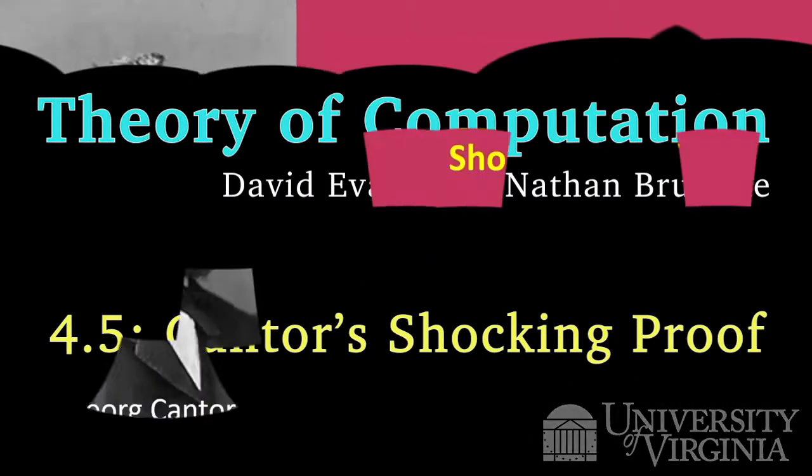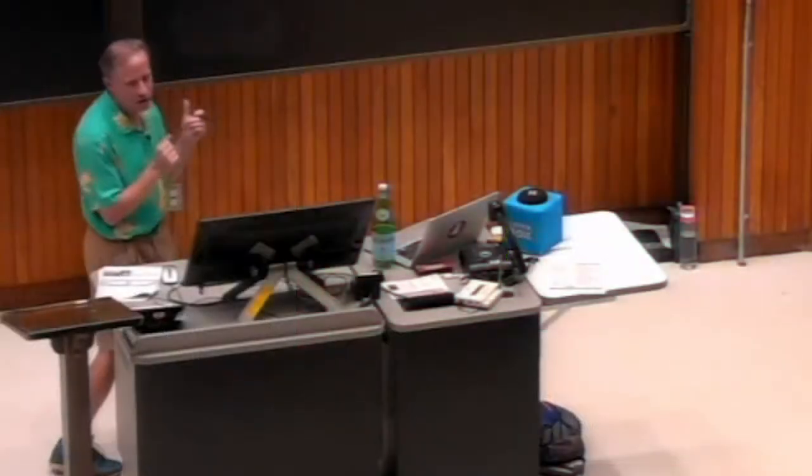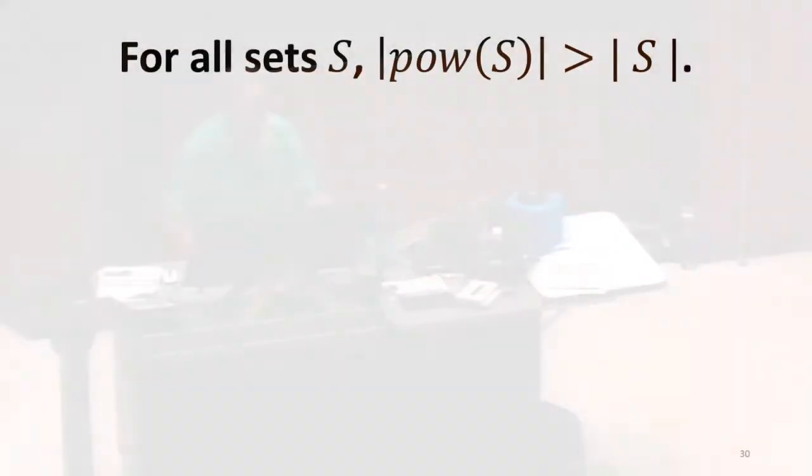What I'm going to talk about is what Cantor did in the late 1800s that showed that the power set of a set is bigger than the set for all sets, not just for finite sets, so that it also holds for infinite sets. This is what we want to show.